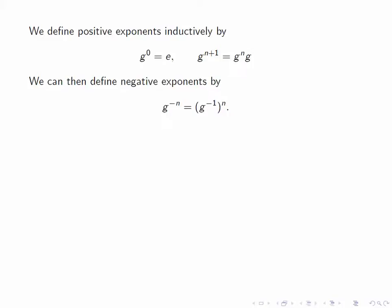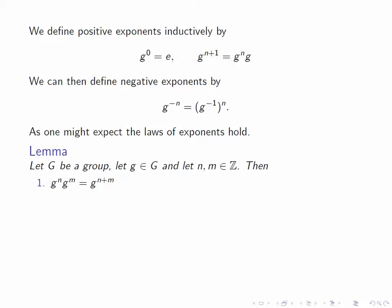We then get familiar laws of exponents. For instance, g to the n times g to the m is equal to g to the n plus m, showing additivity of exponents. Similarly, g to the n raised to the power m is just g to the nm, and g to the minus n is the inverse of g to the n.